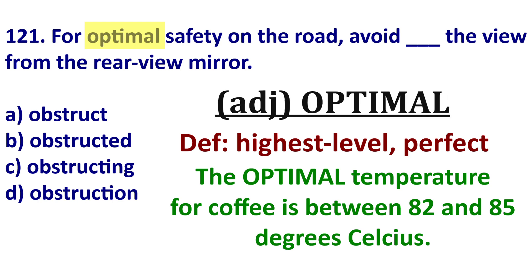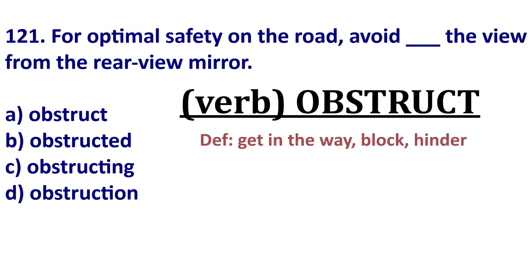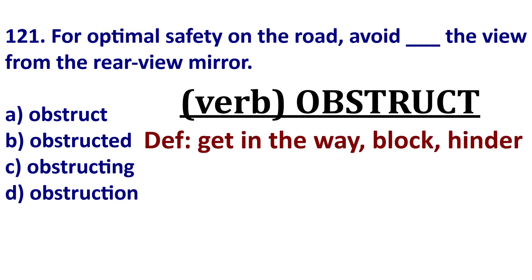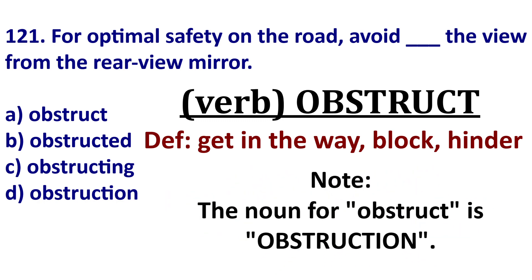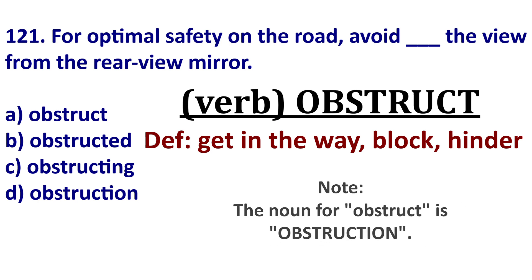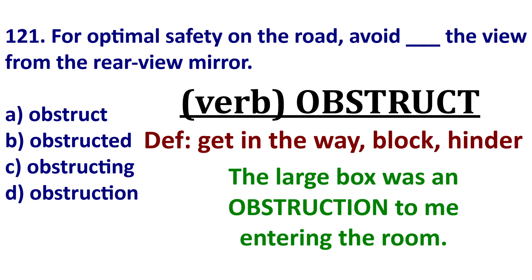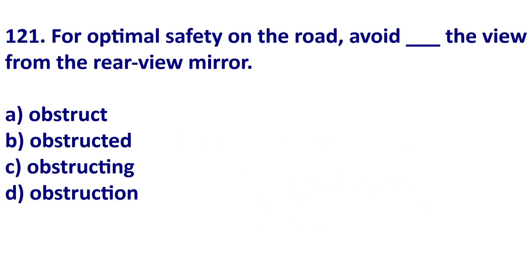The second word is 'obstruct,' meaning to get in the way, interfere, or block. For example, a large group of people obstructed me from entering the building — so I couldn't enter because the people blocked me. Maybe I wasn't invited to the party. The noun form is 'obstruction,' meaning a blockage or something in the way. For example, the large box was an obstruction to me entering the room.